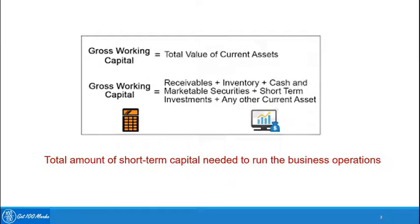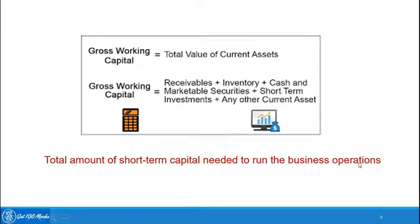Coming back to the slide, gross working capital equals the total value of current assets on a balance sheet. A few of the current assets listed here are receivables, inventory, cash, and marketable securities. By marketable securities, we mean securities which can be easily liquidated, plus short-term investments the company has made. So, total amount of short-term capital needed to run business operations — this is gross working capital.